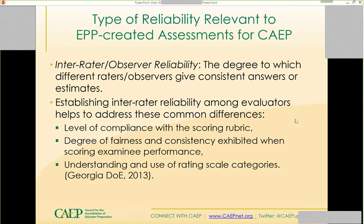The kind of reliability CAPE is primarily focused on is inter-rater or observer reliability — the degree to which different raters or observers give consistent answers or estimates. We don't want candidates shopping for ratings across multiple raters, university supervisors, cooperating teachers, and mentor teachers. What we want them focused on is those skills, dispositions, and knowledge we're all looking for in relation to our teacher candidates. That focus can be honed with a good, reliable, valid instrument.